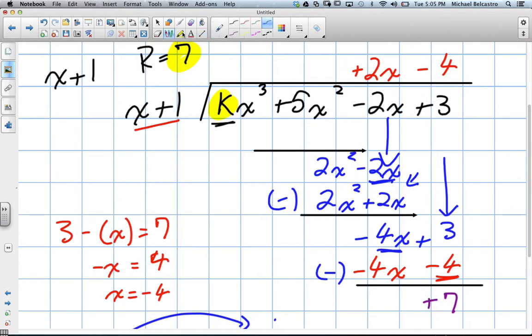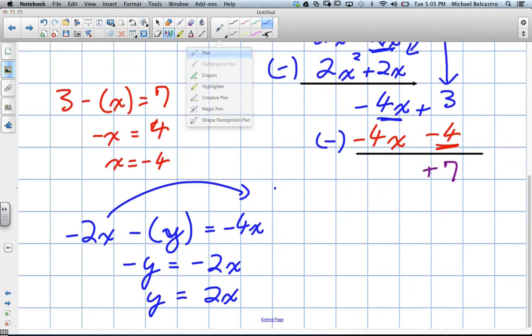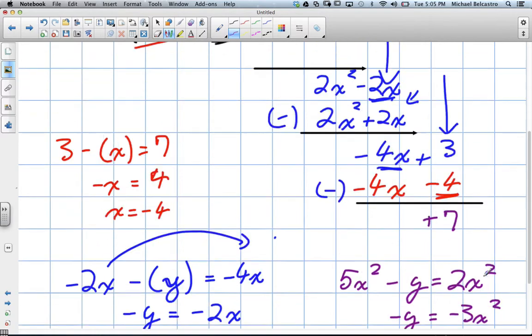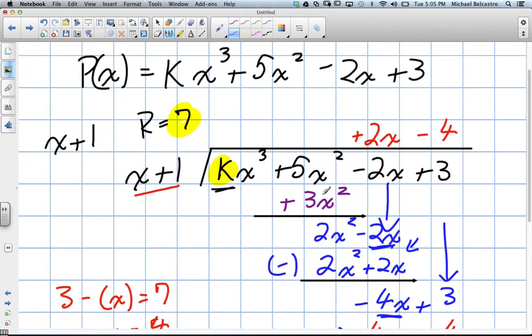We work backwards again from here. We have our 5x squared. 5x squared subtract what value gave us our 2x squared. We get y equals positive 3x squared. So this was set up as positive 3x squared. Which means if we multiplied by positive 3x squared here, that means our value over here must have been 3x cubed. Which means our k value should have been the value of 3.